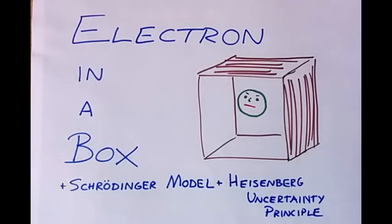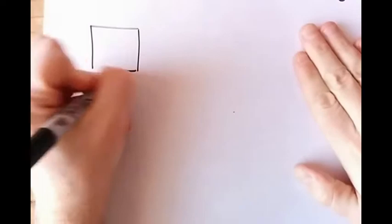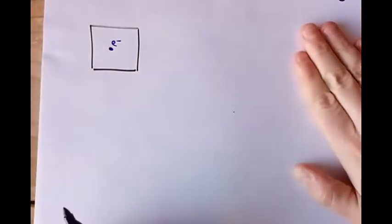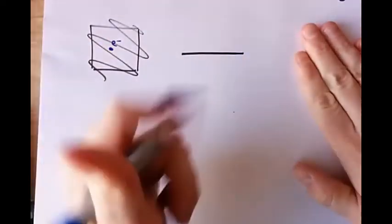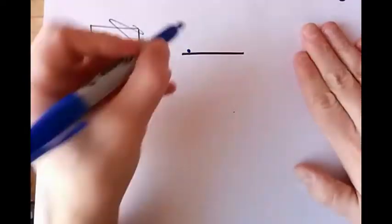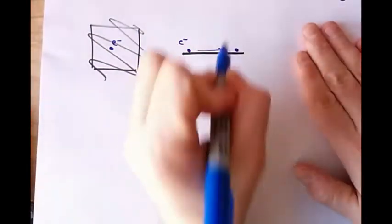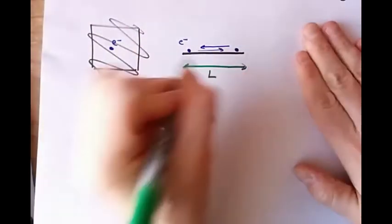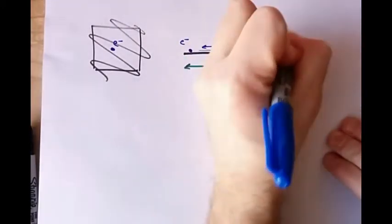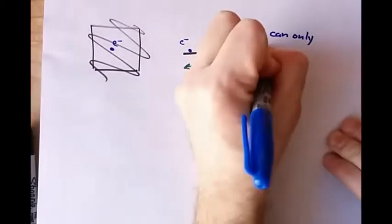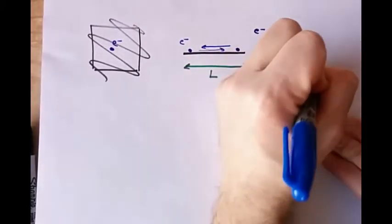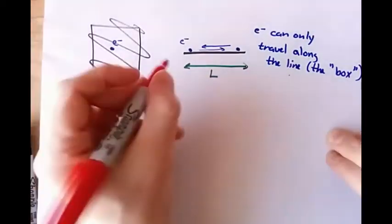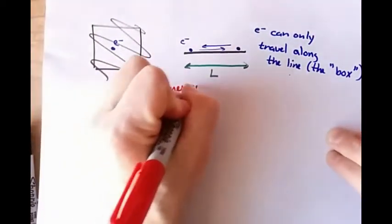Let's trap an electron in a box, and let's make the box one-dimensional — so really it's just a line. The electron is trapped traveling along a line of length L. The electron cannot escape from this box. Also, it's a closed system, so energy cannot enter or leave the box.